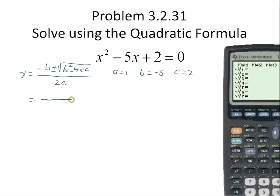So I'm going to have that this is equal to: the opposite of the negative 5, plus or minus the square root of negative 5 squared minus 4 times the a which is 1 times the c which is 2, and this is all divided by 2 times the a. Hopefully you can see my dots here, the times signs.